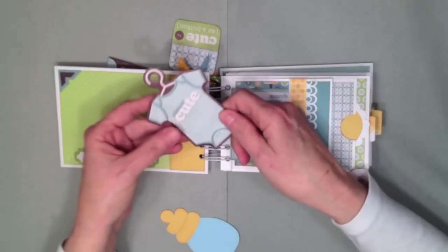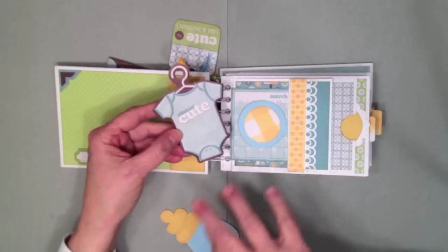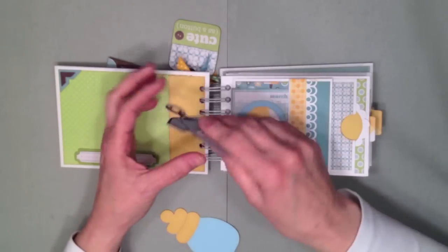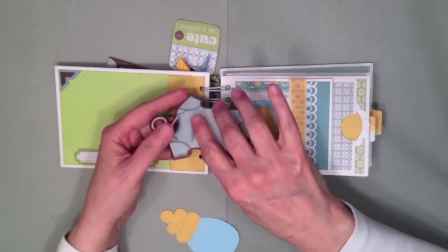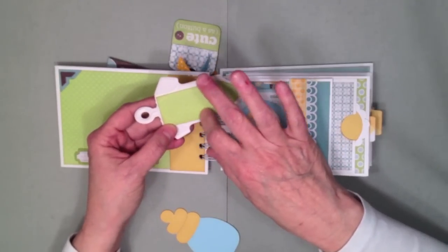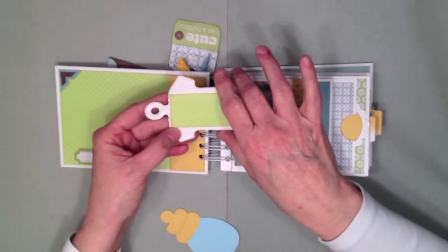This is one of the actual die cuts from the paper collection. I just thought it was darling and the fact that it says Stinking Cute on there is fabulous. The only thing I didn't like about the little tag is they have all their little advertising on the back. It says We Are Memory Keepers and it has a little UPC scan code.